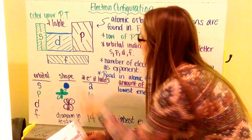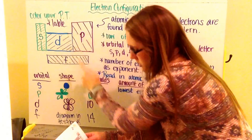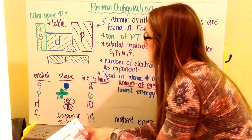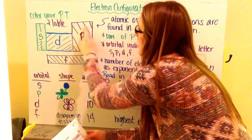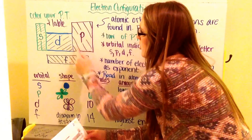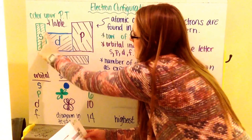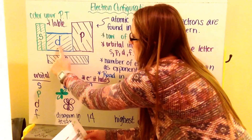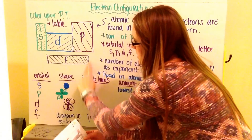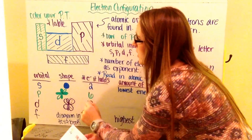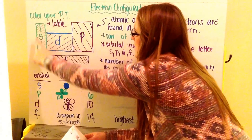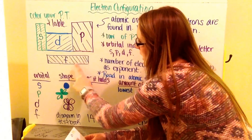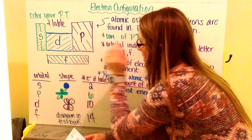Groups 3 through 8, which is the groups of boron, carbon, nitrogen, oxygen, fluorine, and helium — this half of the table is your P block. In the middle, your transition elements make up your D block, and your inner transition elements make up your F block. Your S block is the lowest energy, and your F block is the highest energy.